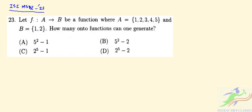Question number 23: Let f: A → B be a function where A is given as {1, 2, 3, 4, 5} and B is given {1, 2}. How many onto functions can one generate?